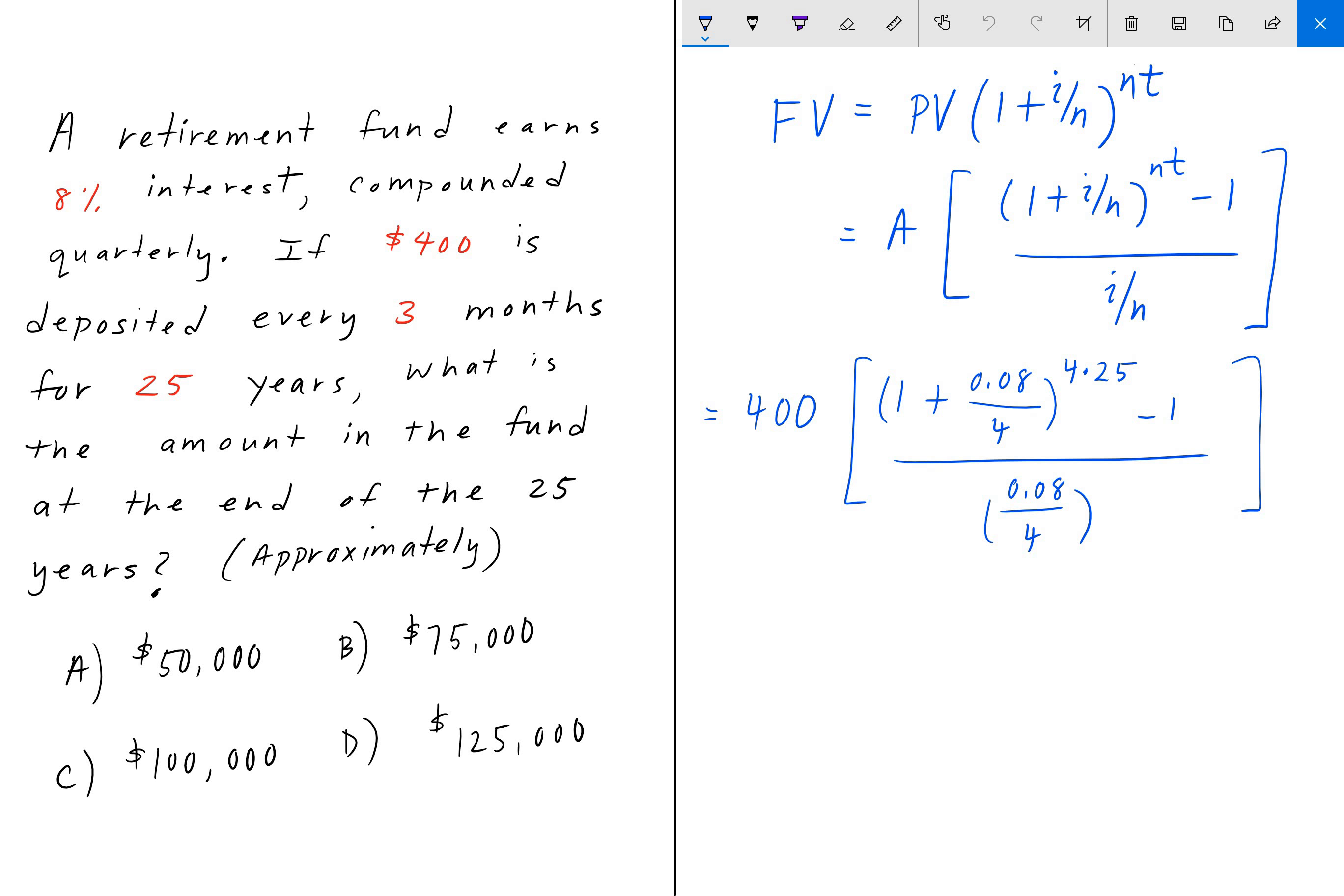Going back, when I plug in all the values here, I get $124,892.92, and that's closest to D here. That is the exact amount, $125,000 is the approximate amount.